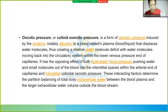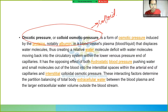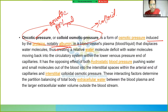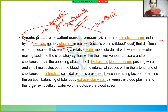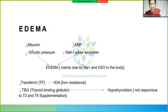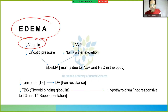Oncotic pressure is colloid osmotic pressure — the osmotic pressure induced by proteins, notably albumin. The osmotic pressure caused by albumin is called oncotic pressure. Loss of albumin in the urine means albumin decreases, oncotic pressure decreases, and as a result edema occurs.